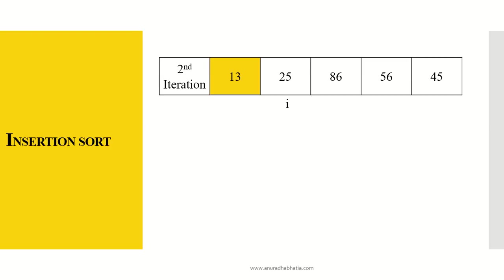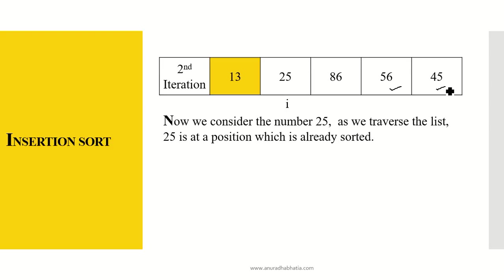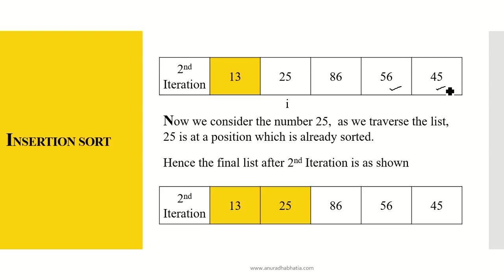This becomes the input to pass two of insertion sort. I is incremented by one, so i is now at 25. 25 is compared with 86 — 25 is less than 86, no exchange happens. 25 compared with 56 — 25 is less than 56, no exchange. 25 is less than 45 again, so no sorting happens. So 25 is already at a proper position, and after the second iteration the list remains 13, 25, 86, 56, and 45.